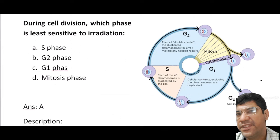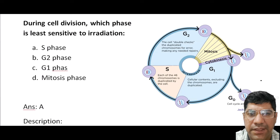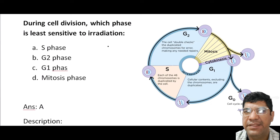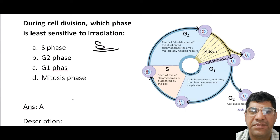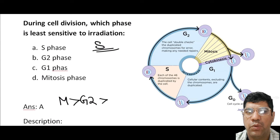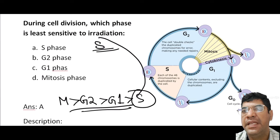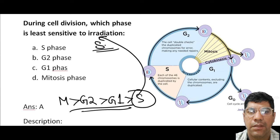During cell division, which phase is least sensitive to radiation? The answer is the S phase. Among the phases of the cell cycle, the S phase is least sensitive to radiation. The order of sensitivity is: M phase, G2, G1, and S phase — the S phase is least sensitive to irradiation.